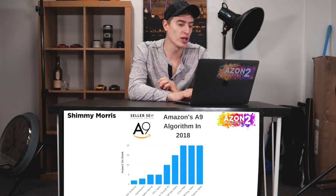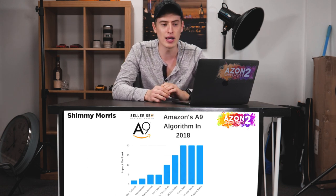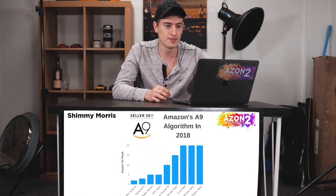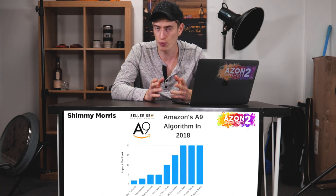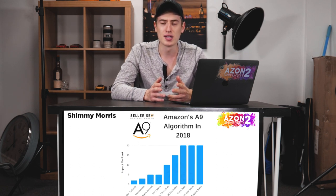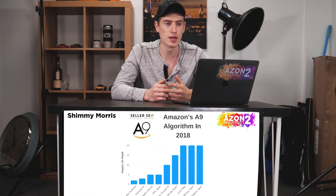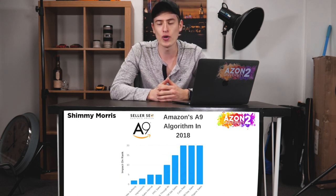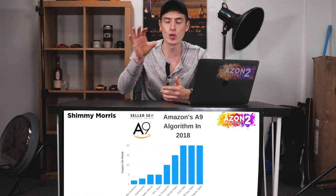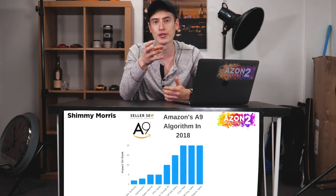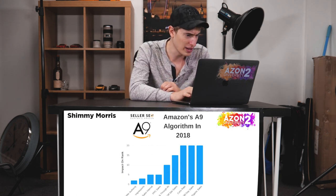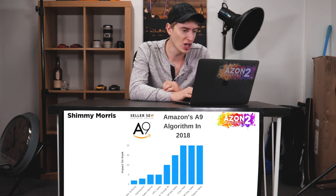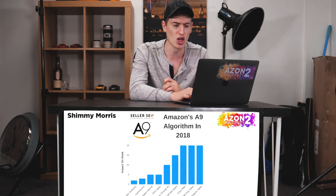Sales internal means sales that don't require someone to have searched for your product — sales that initiate from the Amazon website without being tied to a search. For example, if your product appears in a 'frequently bought with' section and you get sales from that, that's what sales internal means.